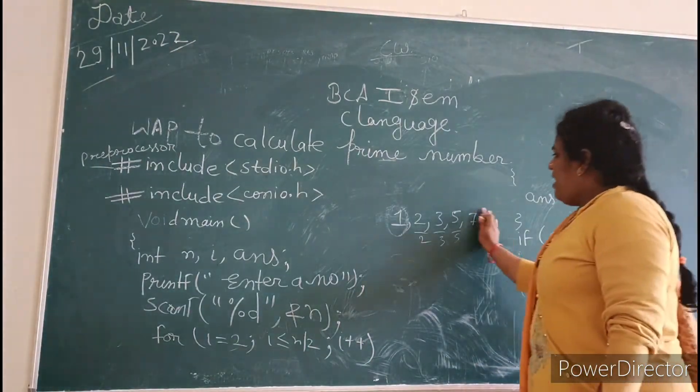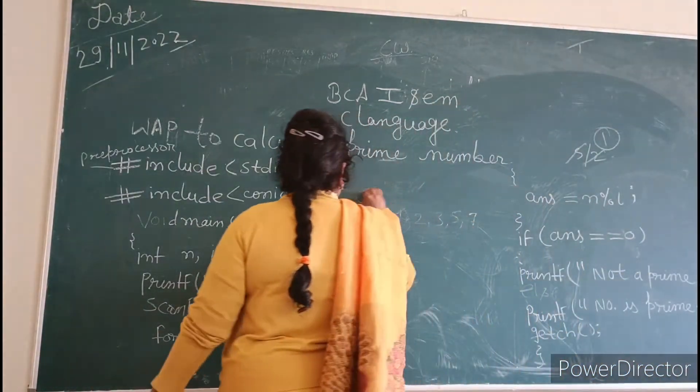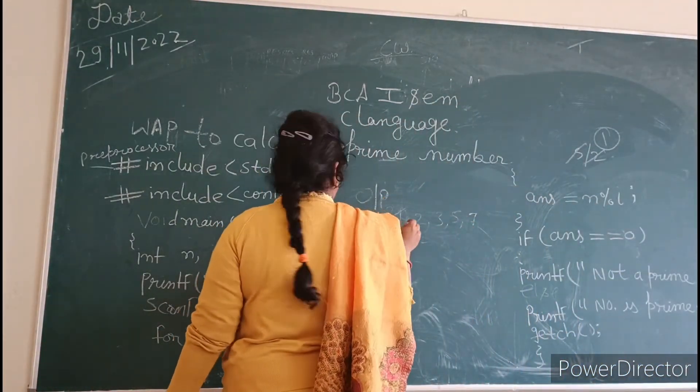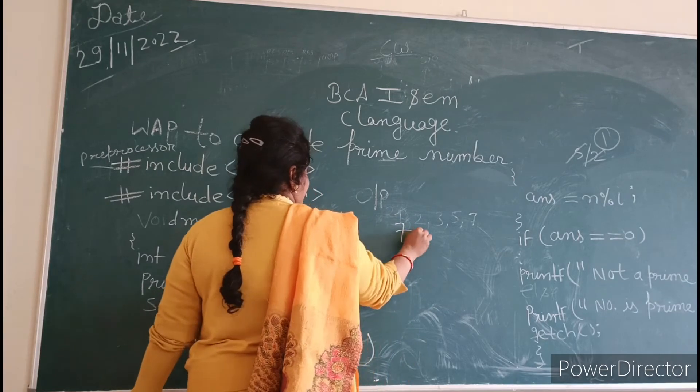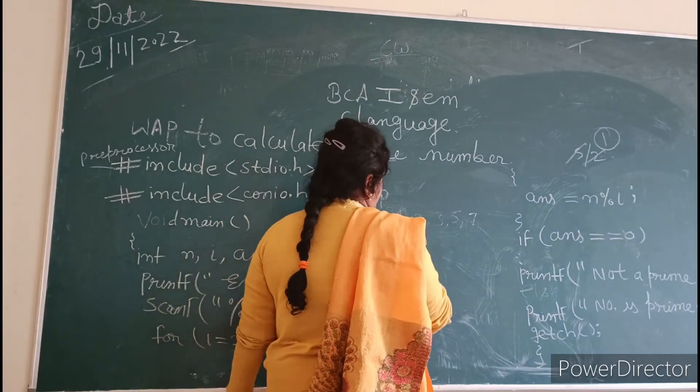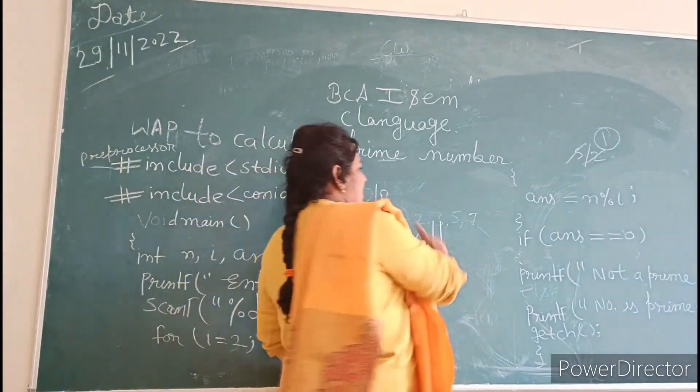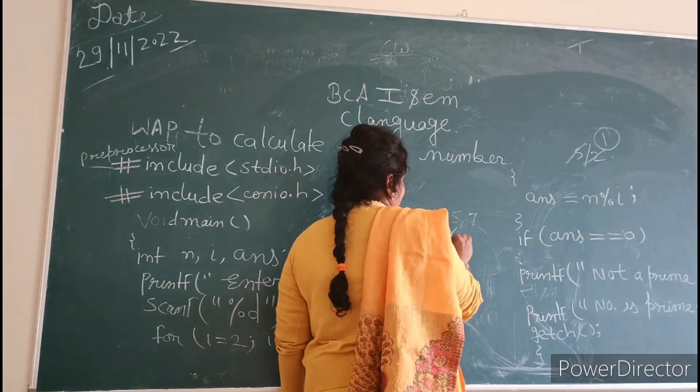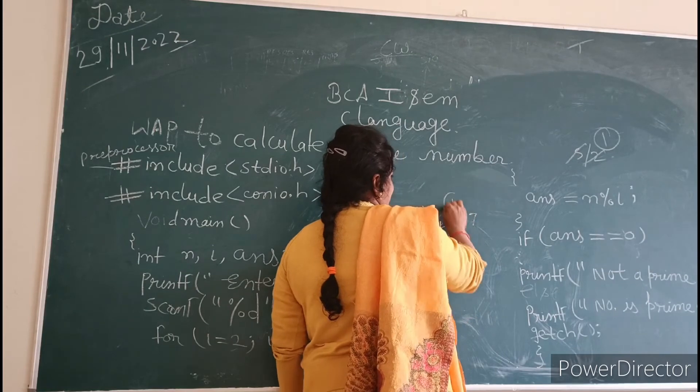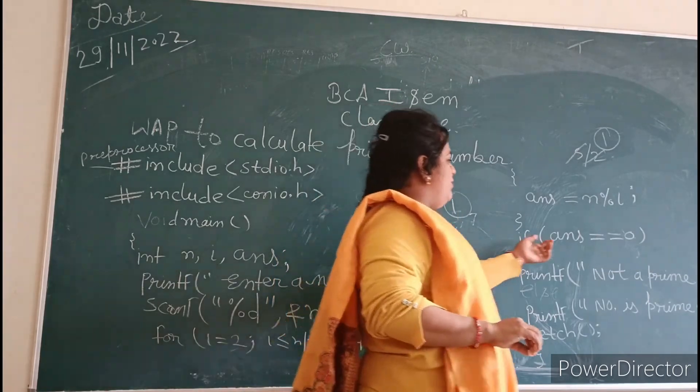So if you have modulo, we will have remainder to the number. We will divide the number, which is the remainder.